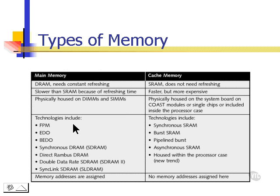The technologies for main memory RAM or DRAM are fast page mode (FPM), EDO — which stands for extra data output — and then there are synchronous technologies like synchronous DRAM and direct Rambus DRAM. There are many different technologies, and we'll talk about some of these as well.